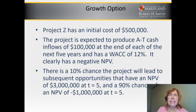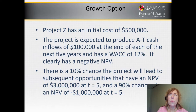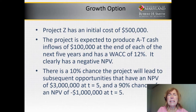Project Z has an initial cost of $500,000. The project is expected to produce after-tax cash inflows of $100,000 at the end of each of the next five years and has a WACC of 12%. It clearly has a negative NPV. But there is a 10% chance the project will lead to subsequent opportunities that have an NPV of $3 million at year five, but a 90% chance the project will have an NPV of negative $1 million at year five.